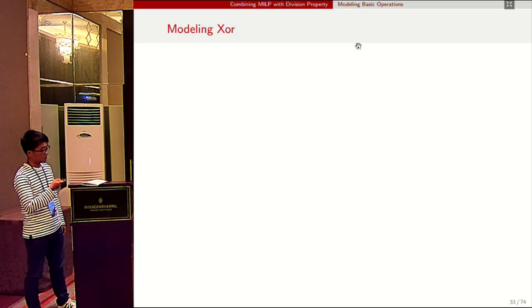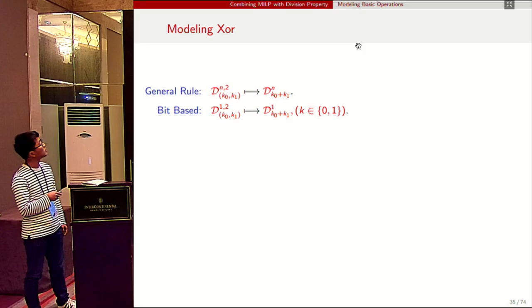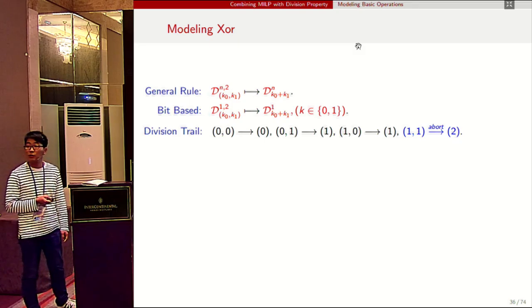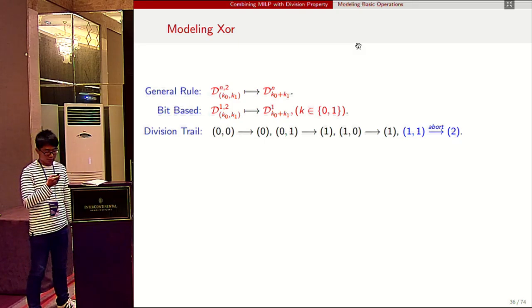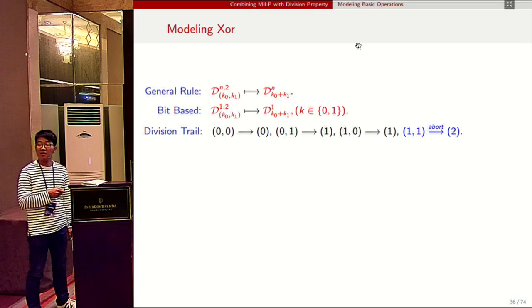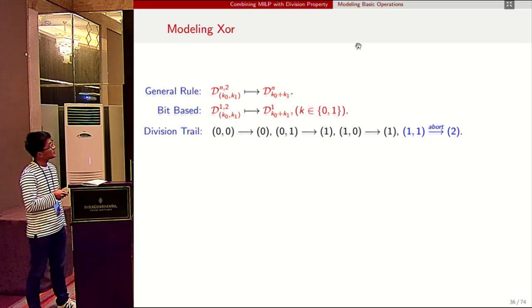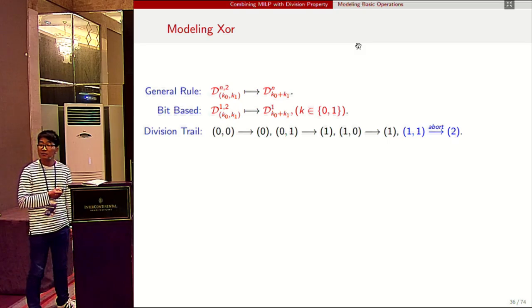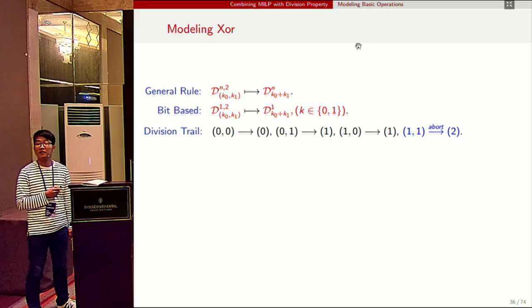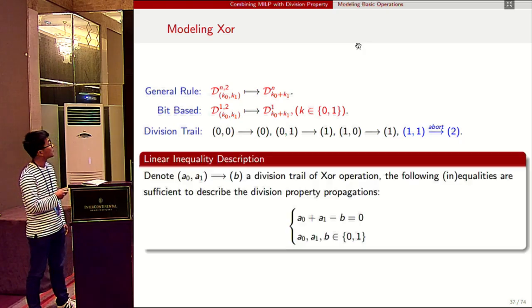Similarly, for the XOR operation, in the bit-based case where n equals one, we compute three division trails. For the particular situation where k_0 and k_1 both equal one, this propagation is aborted because k_0 plus k_1 equals two, which is greater than one. Since we consider bit-based division property, this division trail is invalid.